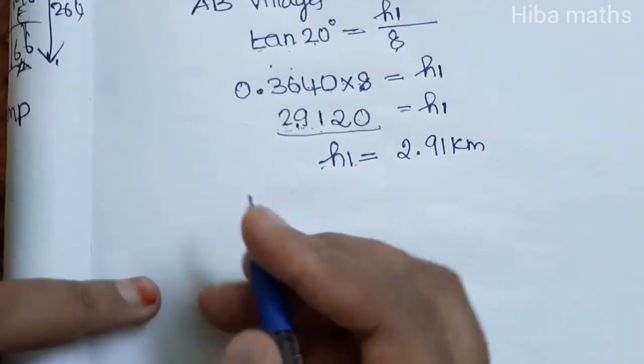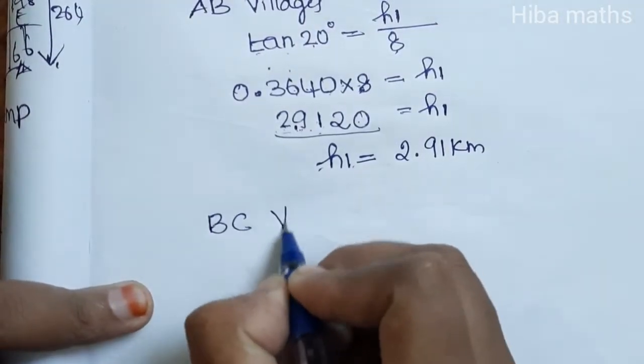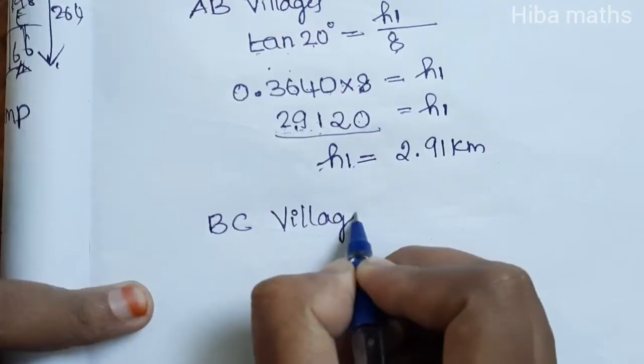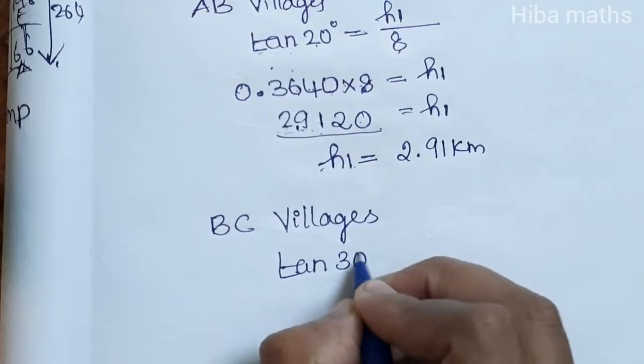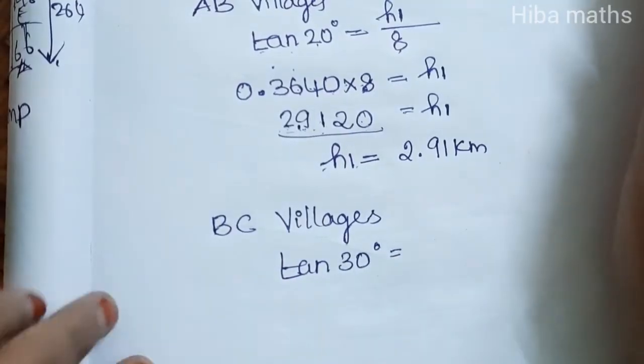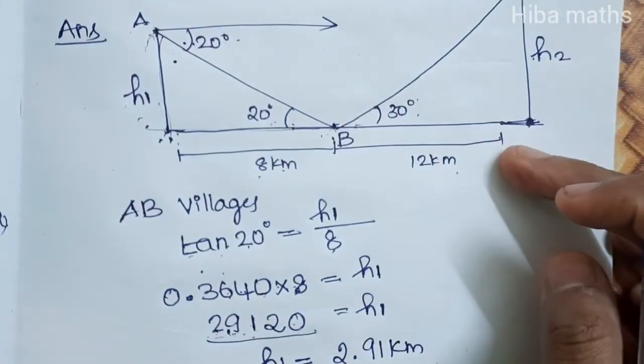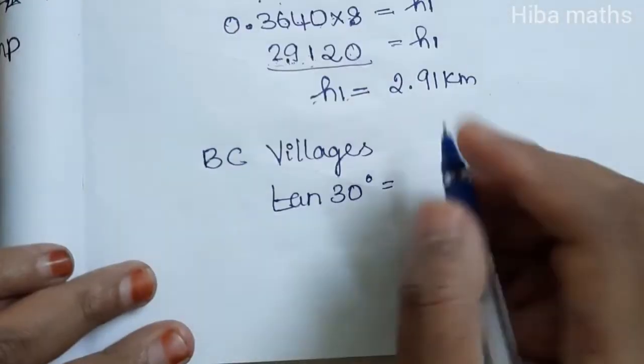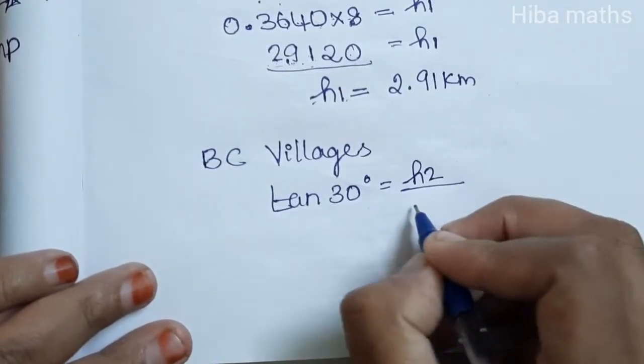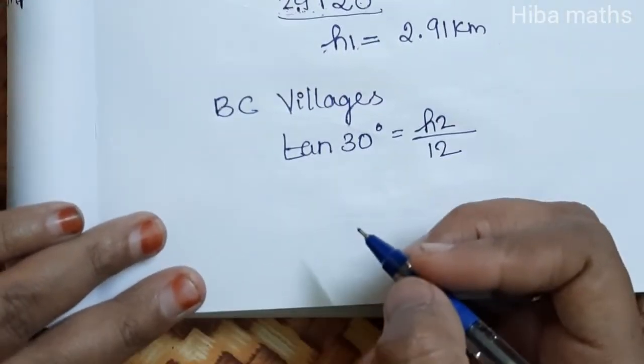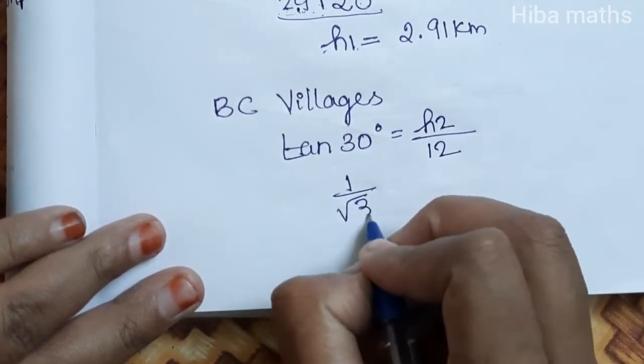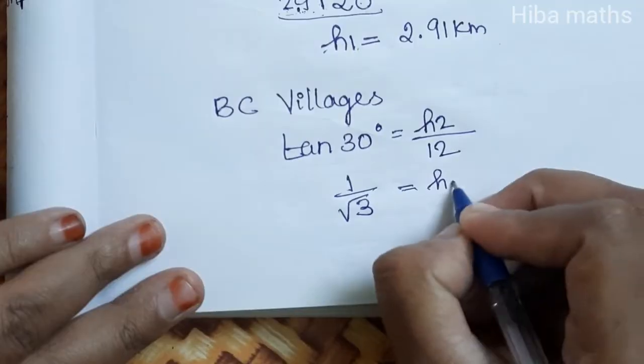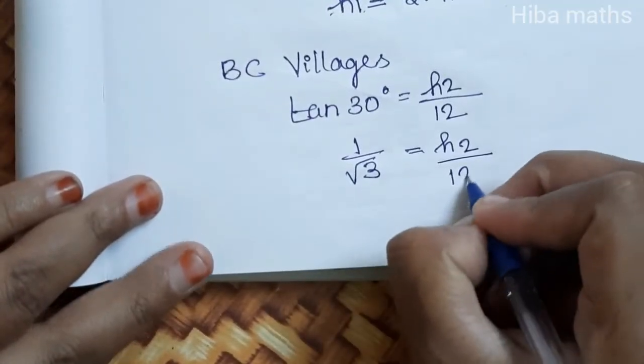For BC Village, we have 30 degrees. Tan 30 degrees equals opposite by adjacent, which is h2 by 12.